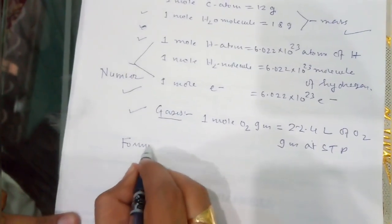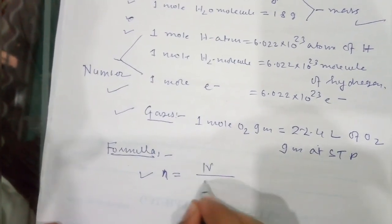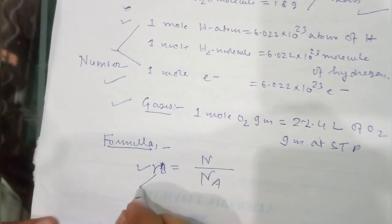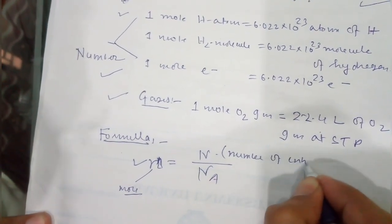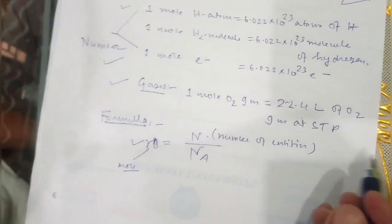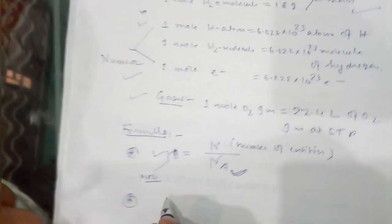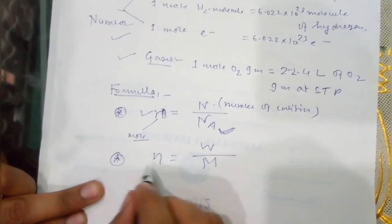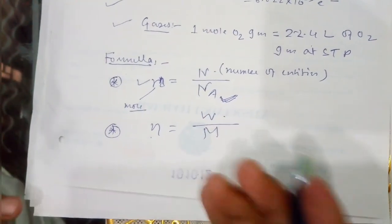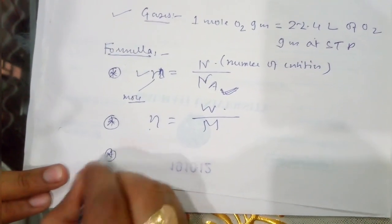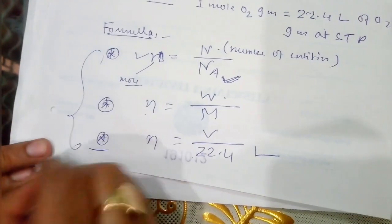In competitive exams you need some formulas. The first formula is: n = N / NA, where small n is the number of moles, capital N is the number of entities (atoms, molecules, ions, or electrons), and NA is Avogadro's number. The second formula is: n = W / M, where W is the weight and M is the molecular mass (or atomic mass for atoms). The third formula for gases is: n = V / 22.4 liters.